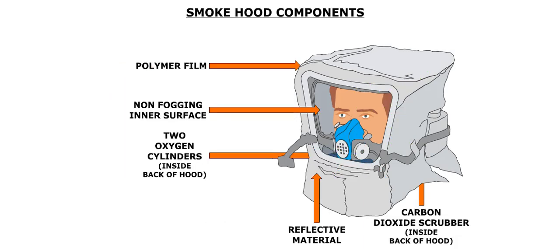The smoke hood consists of a durable, tear-resistant combination of polymer film and reflective material. The inner surface is designed to prevent fogging of the mask while the hood is worn. The hood contains two oxygen cylinders and a carbon dioxide scrubber.